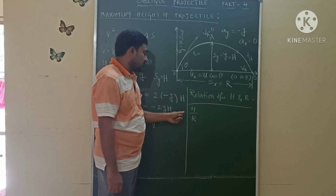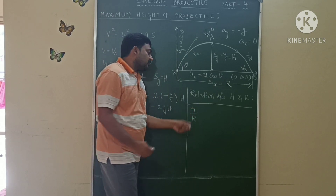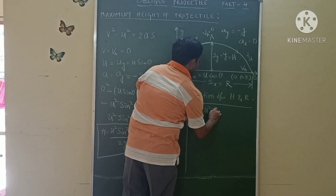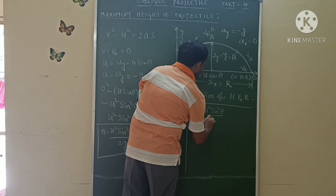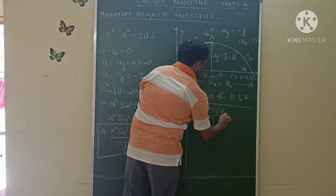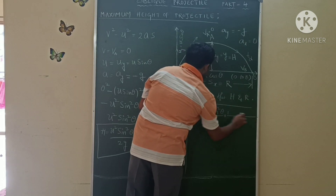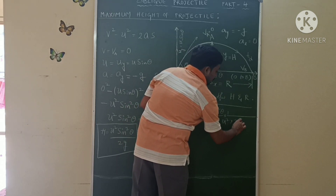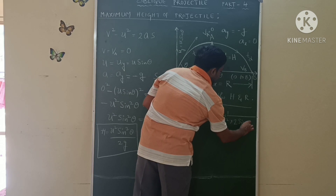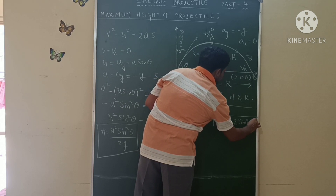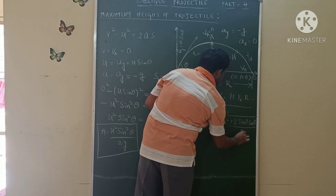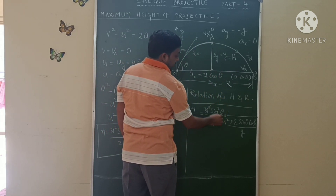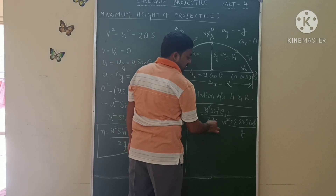Taking the ratio H/R: H equals u² sin²θ divided by 2g, whereas R equals u² sin2θ divided by g, which is u² × 2 sinθ cosθ divided by g. Here u² cancels and g also cancels.